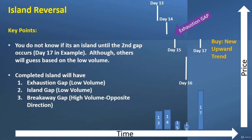The key point is you don't know if it's an island until the second gap occurs — that's day 17 in this example. You might see it jump out after an exhaustion gap and guess it's a reversal, and it could be, but you really need to look at that volume and confirm with the following day. Others will guess based on the volume — if it's low volume on day 16, they might call it an island reversal. That's not a bad guess, but to be a true island reversal you need that day 17 with high volume, which really establishes that things have changed and a new trend is forming.